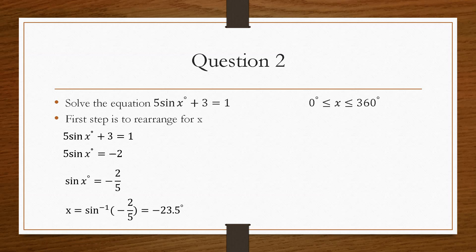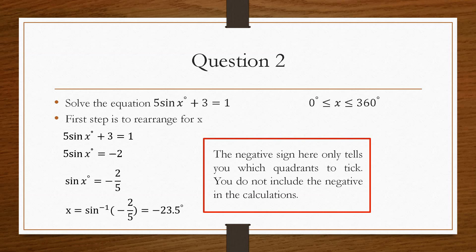Now, there are a couple of ways in which people will solve this. For me personally, I will find shift sin of minus 2 over 5. And that will give us a value of negative 23.5. However, some people neglect the negative sign here in this step. And just take positive 2 over 5, but keeping the negative in the back of their mind. The reason that I keep the negative is so that it reminds me of which quadrants to tick. You don't include the negative in the calculations. That's where we replaced the theta with the angle.